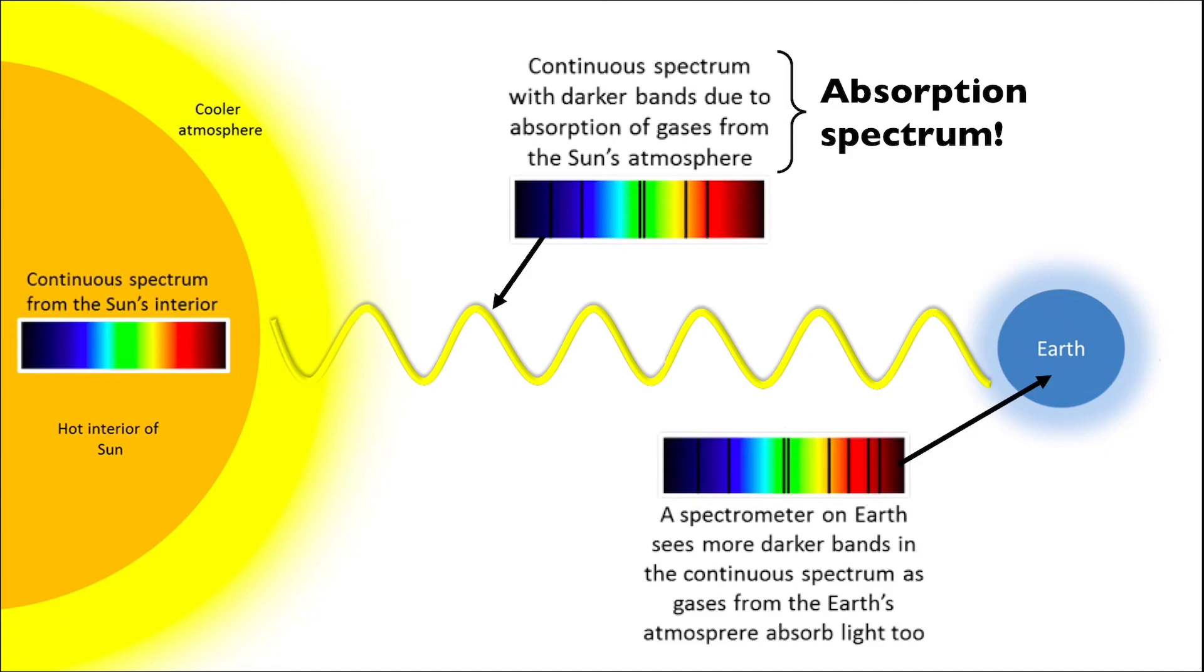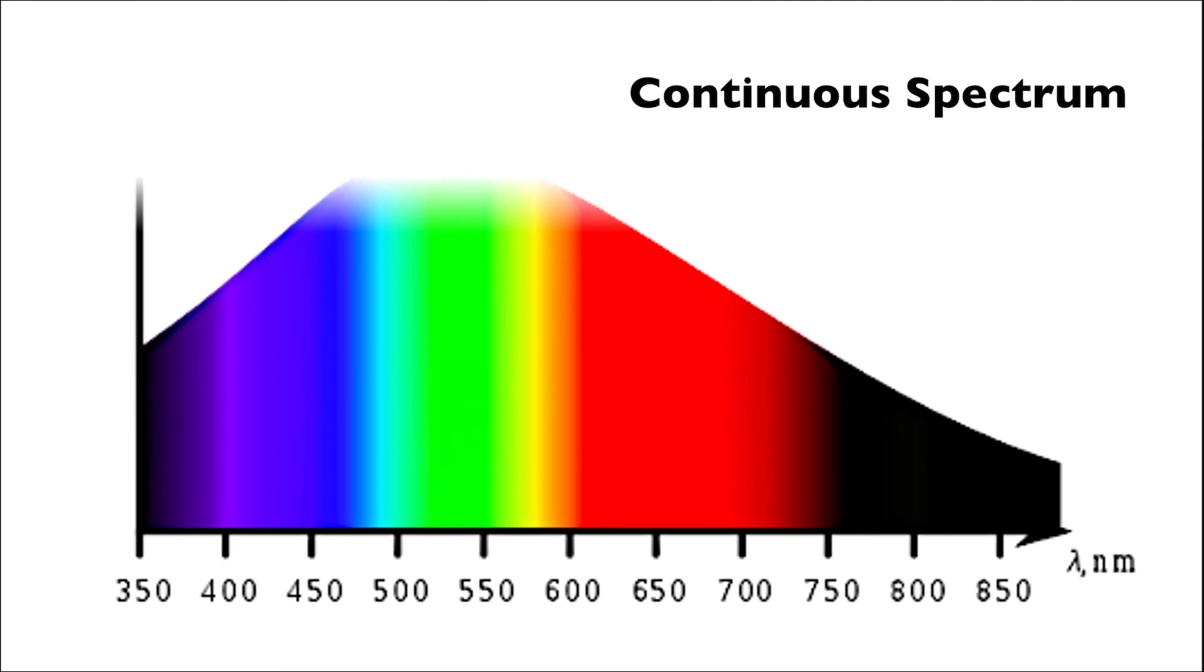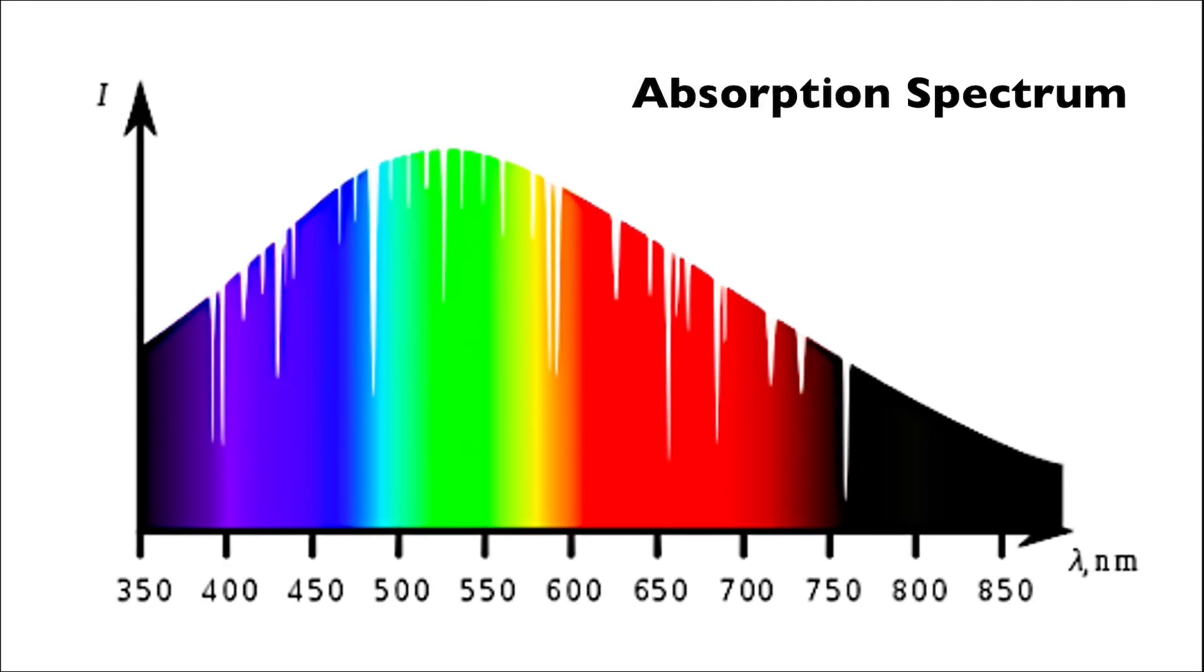Now if we take what we've covered in this video and combine it with the black body curves we discussed in the previous videos of this unit, we would see a continuous spectrum that looks something like this, and an absorption spectrum that looks like this.